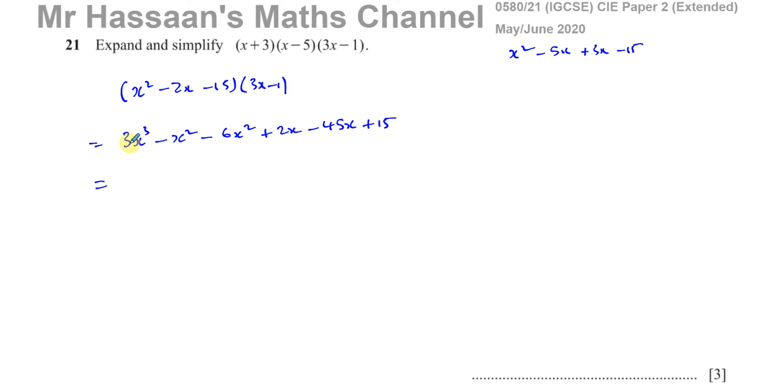Be careful about your signs here. So the x cubed terms, we're going to combine them. There's only one. x squared terms is minus x squared minus 6x squared, which is minus 7x squared. Then you've got 2x minus 45x, which is minus 43x and plus 15. So there's our answer: 3x cubed minus 7x squared minus 43x plus 15.